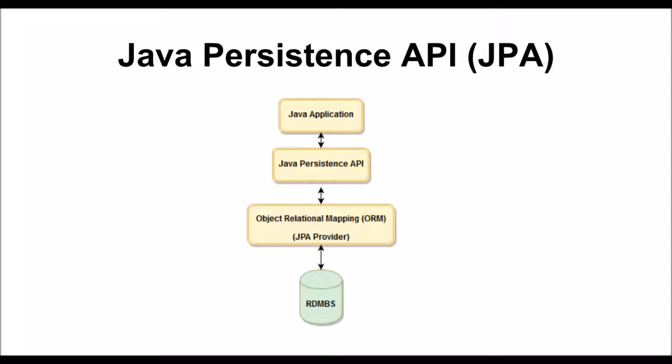JPA is a specification that needs to be implemented over an ORM system such as Hibernate or EclipseLink. ORM stands for Object Relational Mapping, and this kind of system is the one that provides JPA the classes and methods to operate physically on the database.